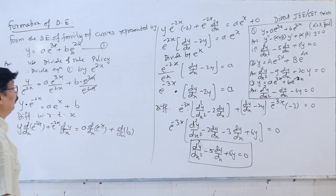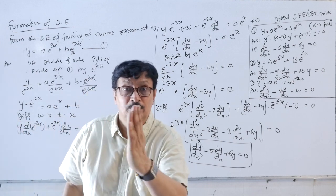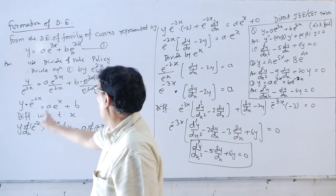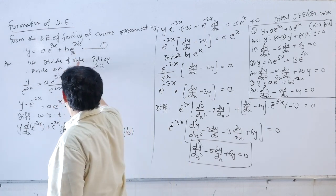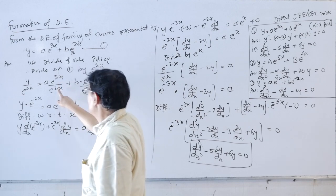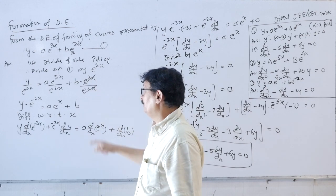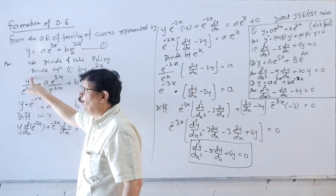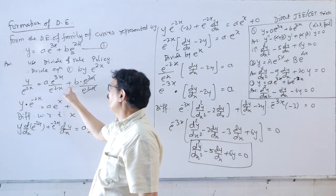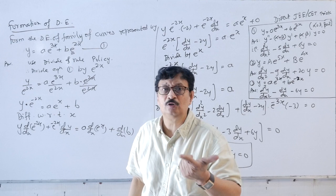The divide and rule policy says: first isolate b alone. B can be isolated by dividing both sides by e^(2x), so b will be alone. Dividing both sides by e^(2x): y/e^(2x) = a·e^(3x)/e^(2x) + b. This simplifies to y·e^(−2x) = a·e^x + b. Now differentiate because the derivative of constant b is 0.